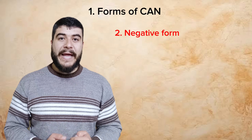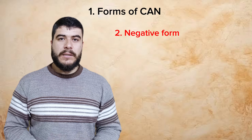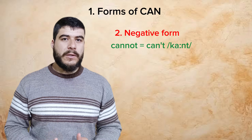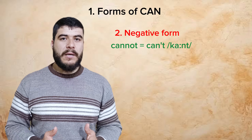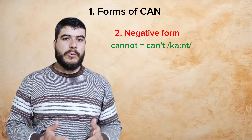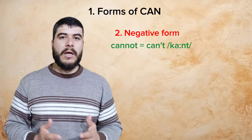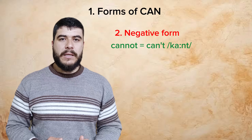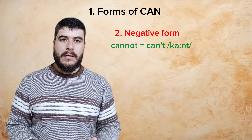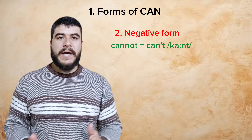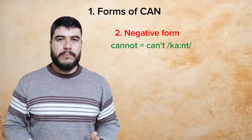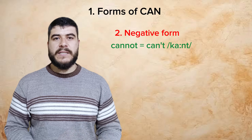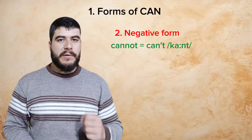Another form of can is the negative one. In the negative form, we use "not" with "can" — it becomes "cannot." But of course, in speech we don't say "cannot," we say "can't." Americans say "can't." So it depends on what accent you're using — whether "can't" or "can't" — but both are correct.